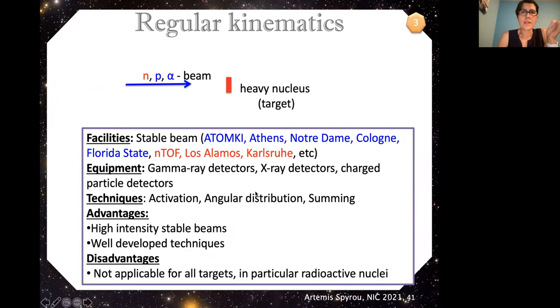So we separate our experiments into two types. We have regular kinematics and inverse kinematics. Regular kinematics, just the more traditional way where we have a heavy nucleus sitting here, and then we have a light beam hitting that nucleus, and we measure the products that are coming out. I show here a whole list of facilities and techniques that use these regular kinematics. But this is just the classic everywhere, at least in the past, this was the technique used. The disadvantage of this technique and why we even needed to invent the inverse kinematics is that it's not applicable for all targets. So if our target is something, some material that it's hard to make, or if it's radioactive, then we cannot use that as a target. And so we have to develop the inverse kinematics. And also sometimes measuring in inverse kinematics might give you better sensitivity.